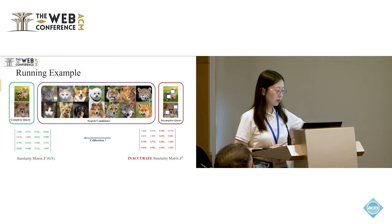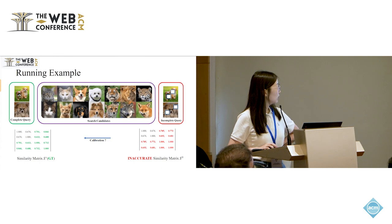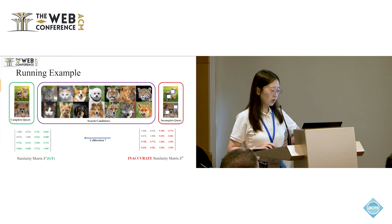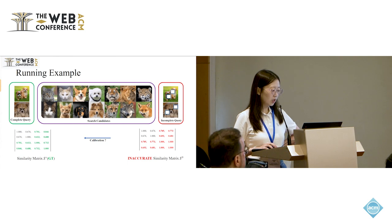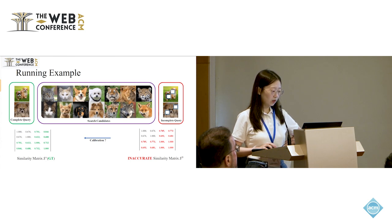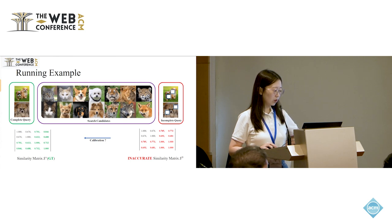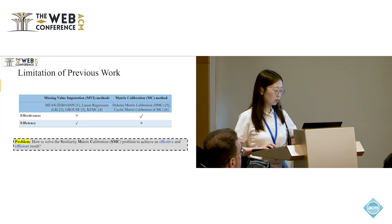Now let's see a concrete example. When the query item is completely observed, we can calculate the similarity matrix directly. But when the query item is incomplete, such as when the image is occluded by something, the similarity matrix between the incomplete query and the complete observed search candidates is inaccurate. When we use the inaccurate similarity matrix for downstream tasks, the retrieval or similarity search performance is not accurate. So here, it motivates us to collaborate the inaccurate similarity matrix to approximate the ground truth similarity matrix.